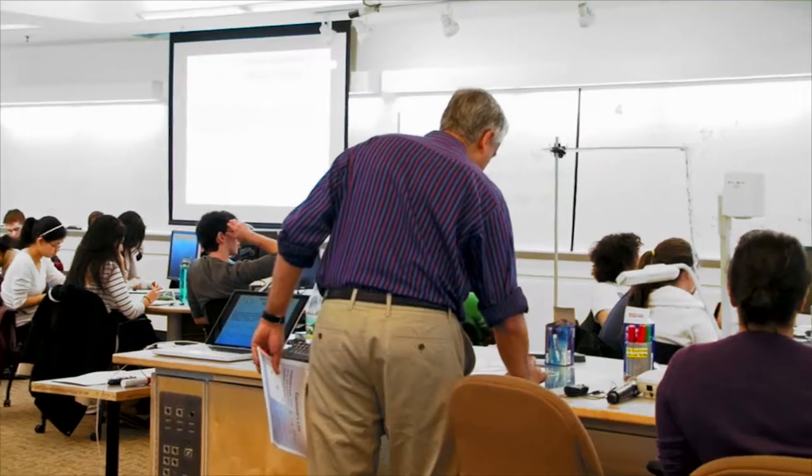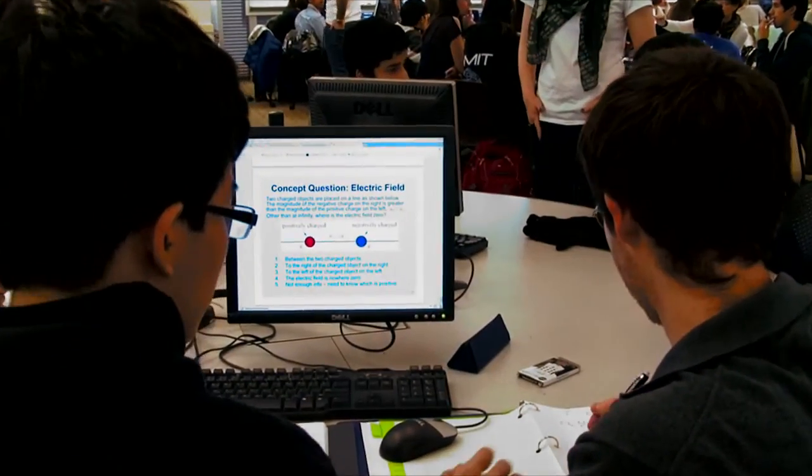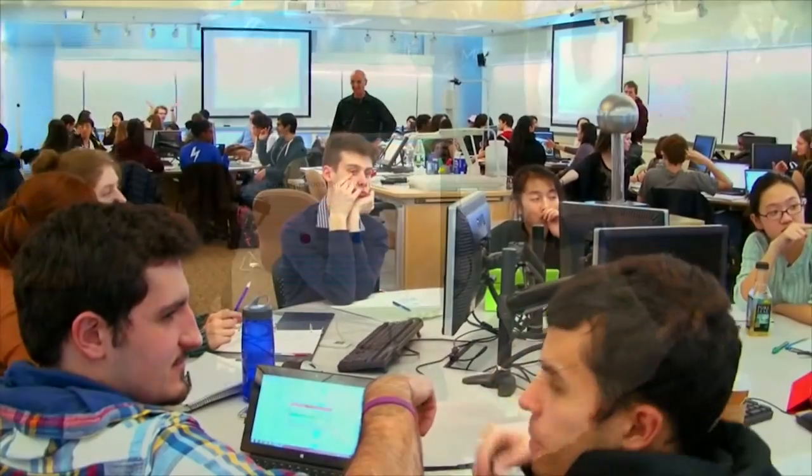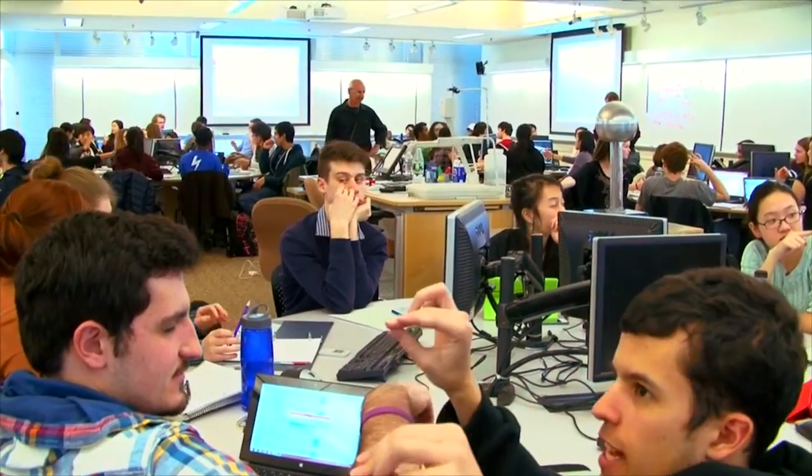If you could reimagine your classroom, what would you change? Would you get rid of the rows of chairs? Create an open space to enhance student-teacher interaction? Design workstations to facilitate collaboration? Maybe your space would look something like this one — MIT's technology-enabled active learning classroom, also known as TEAL.